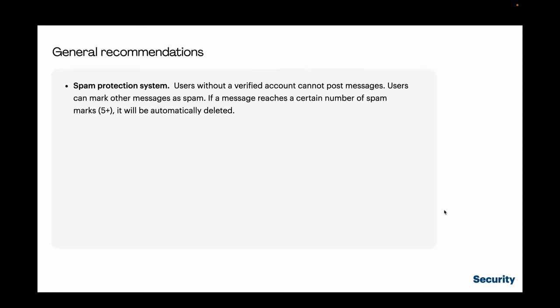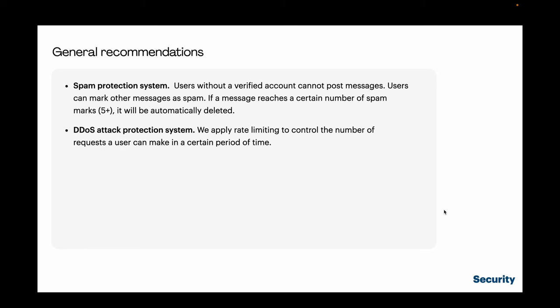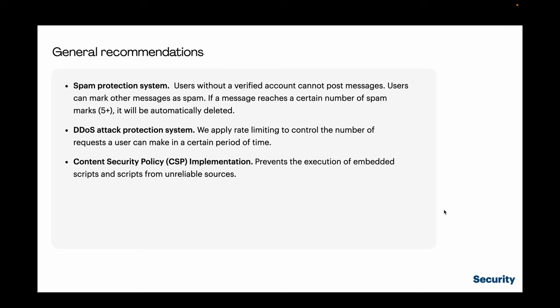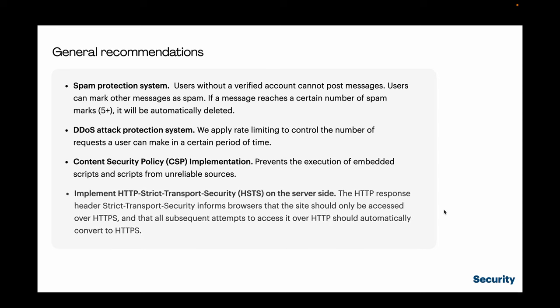Other essential security measures: implement a spam protection system where messages marked as spam by enough users (e.g., 5) are automatically deleted. Use DDoS attack protection with rate limiting to control how many requests a user can make in a given time frame. Use Content Security Policy (CSP) to prevent execution of embedded scripts and scripts from unreliable sources. And implement HTTP Strict Transport Security (HSTS), which informs the browser the site should only be accessed via HTTPS, automatically converting all HTTP access attempts to HTTPS.